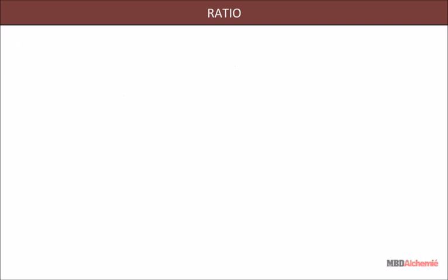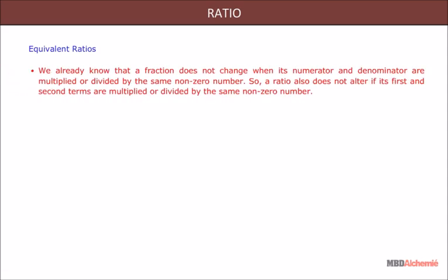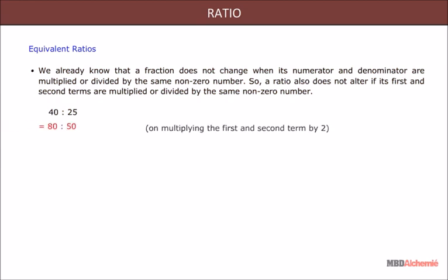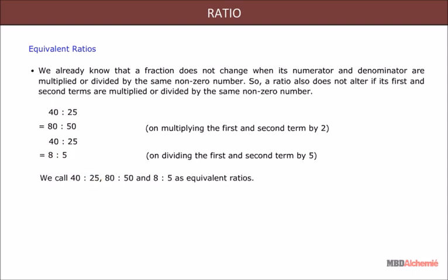Equivalent ratios: we already know that a fraction does not change when its numerator and denominator are multiplied or divided by the same non-zero number, so a ratio also does not alter if its first and second terms are multiplied or divided by the same non-zero number. For example, take the ratio 40:25. On multiplying the first and second term by 2, we get 80:50. On dividing the first and second term by 5, we get 8:5. Therefore, 40:25, 80:50, and 8:5 are equivalent ratios.